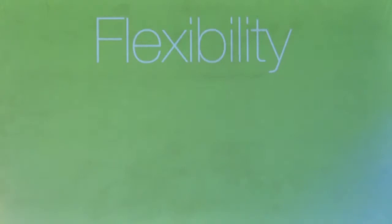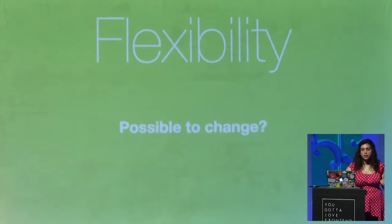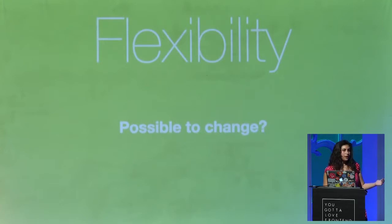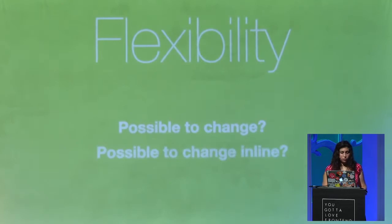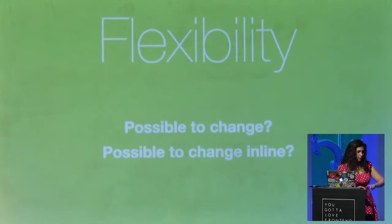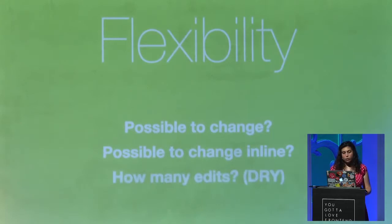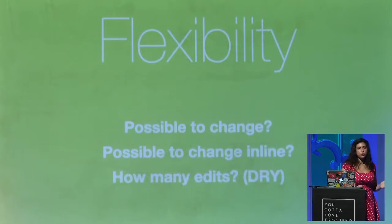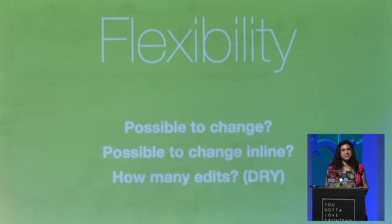What does flexible mean? Flexible means that we need to be able to change it — to change aspects of it. For example, in the pie charts case, it might be the colors or the percentage. We will definitely need to show different percentages. And it's not just about being possible to change it — it also means, can we change it inline? Because that way we can make JavaScript components, with an HTML attribute and JavaScript that picks it up and feeds it into an inline style. Also, how many edits do we need to make? The more edits we need to change, the less good our solution. In software engineering, this is called DRY code — Don't Repeat Yourself. The opposite is WET code: We Enjoy Typing, or We Write Everything Twice.